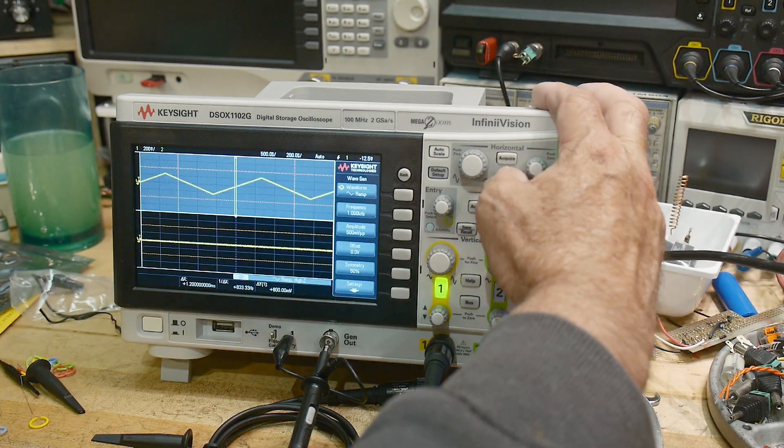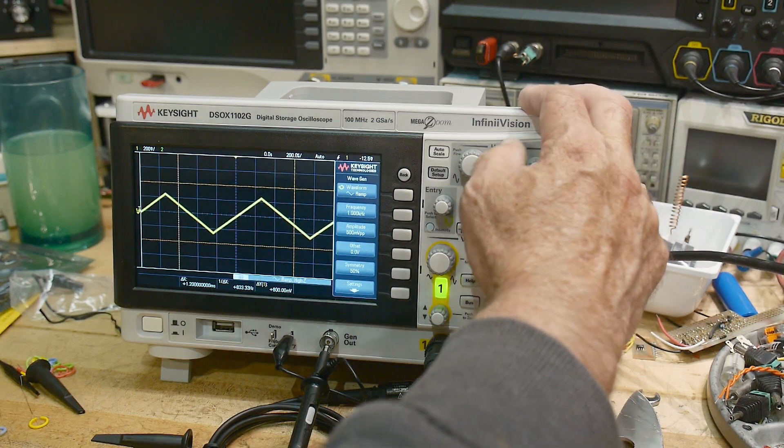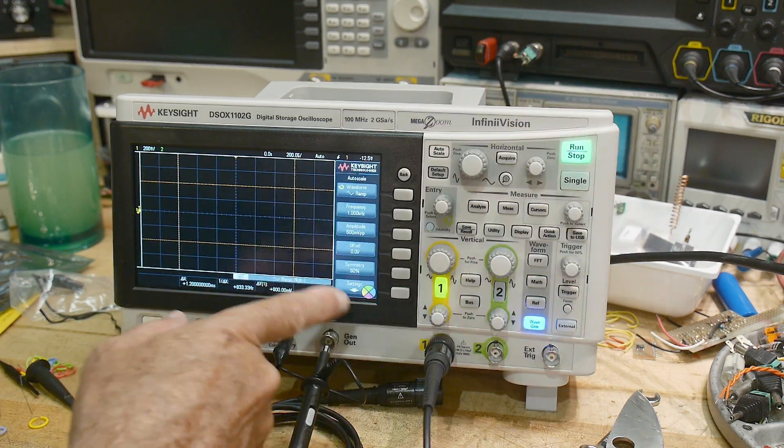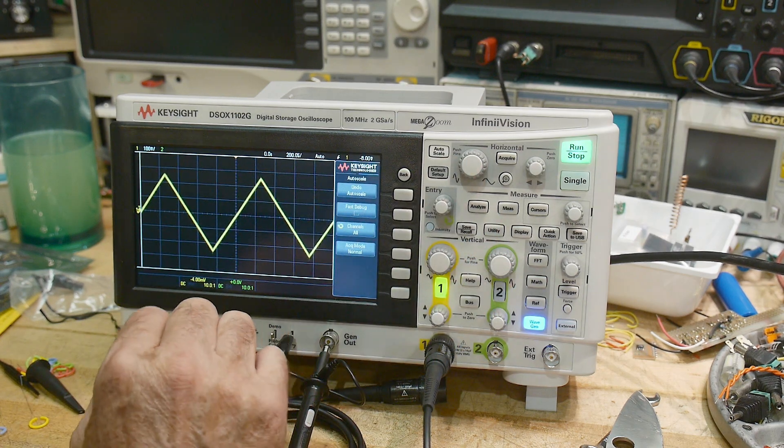So we have a zoom function. Okay. So you get the top and bottom. Acquire. Autoscale. Hit the Autoscale button. And puts it all on the screen for you. Default setup.